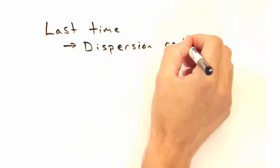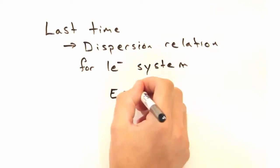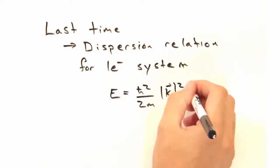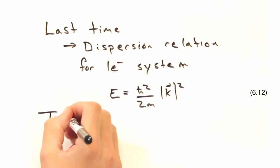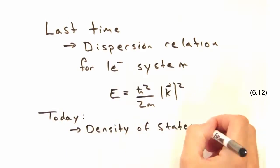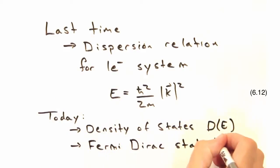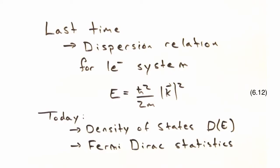Last time we developed a dispersion relation for a one-electron system. Today we'll expand upon that and come up with an expression for the density of states and apply some Fermi-Dirac statistics.